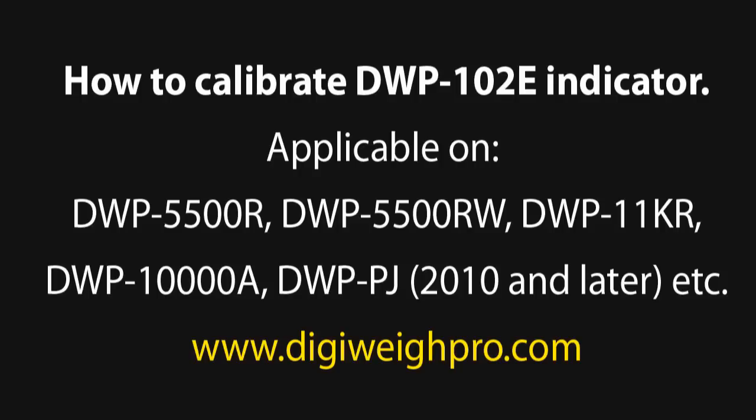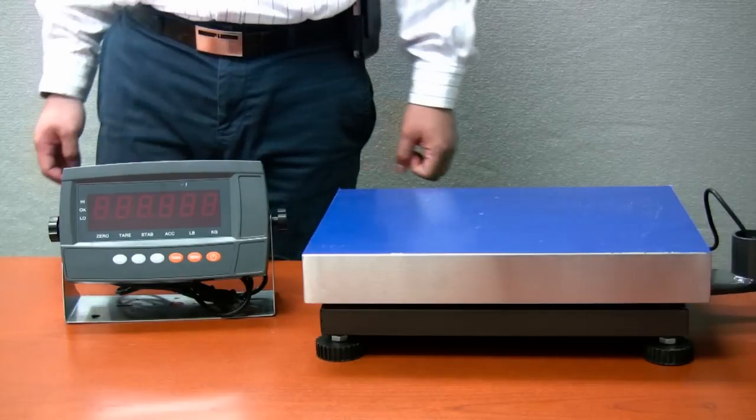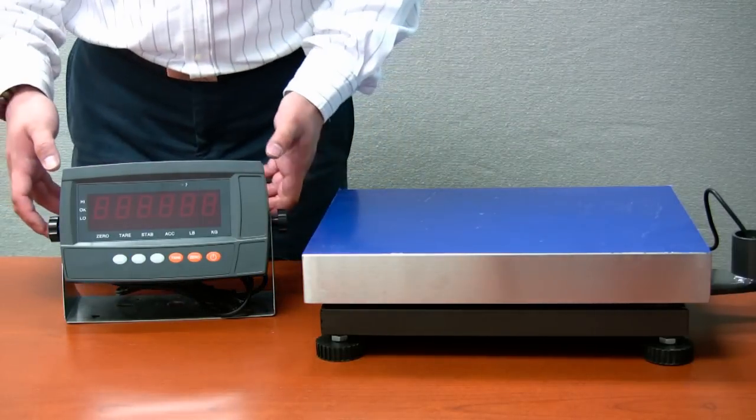Here we will show you how to calibrate a scale with a DWP-102E indicator. We are using a bench scale for this demonstration and this calibration procedure is applicable for all scales using this indicator including floor scales and pallet jack scales.